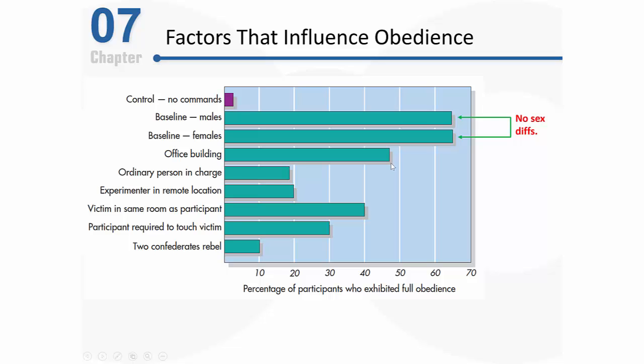This helped Milgram understand that the status of the authority figure was important. He ran another variation where an ordinary person was in charge — a confederate who appeared to be just another subject who happened to be tapped to run the study that day. In that situation, obedience rates were quite a bit lower than in the baseline study, dropping to less than 20 percent.